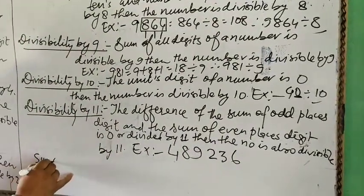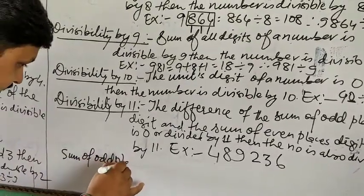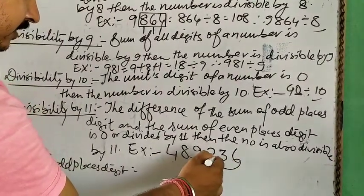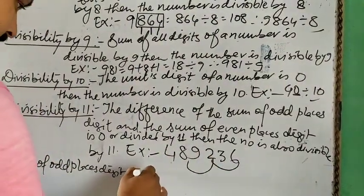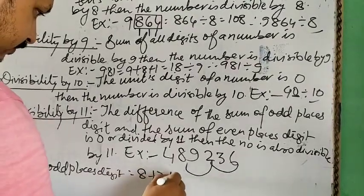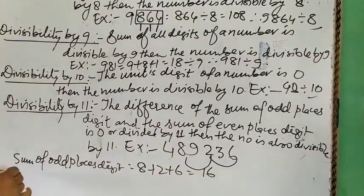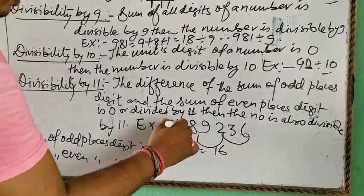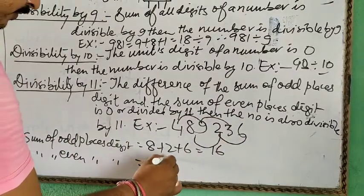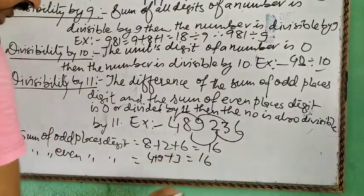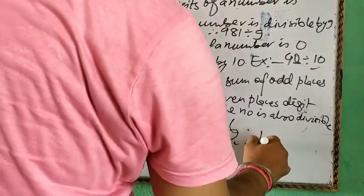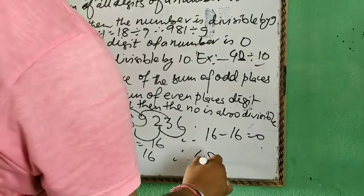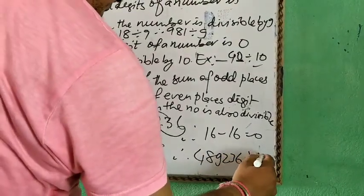Sum of odd place digits equals 8 plus 2 plus 6, that means 16. Sum of even place digits equals 4 plus 9 plus 3, which is 16. So 16 minus 16 equals 0, so 489236 is divided by 11.